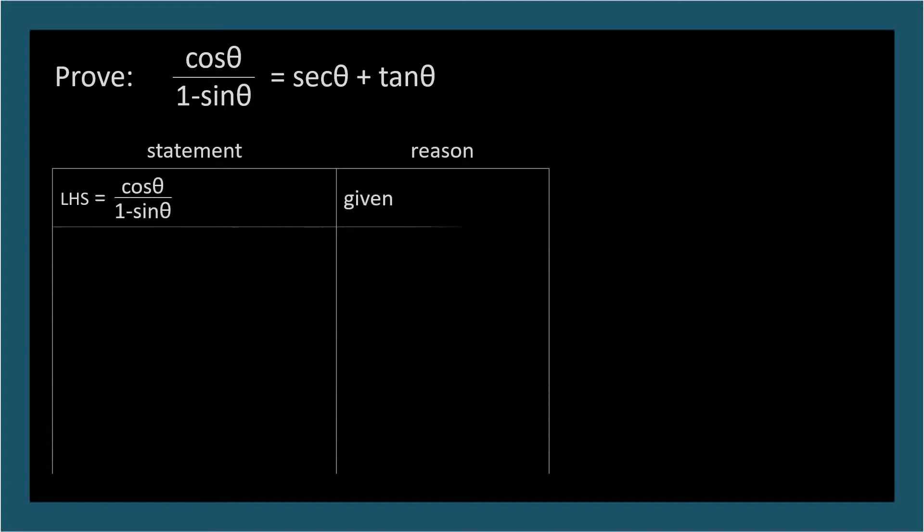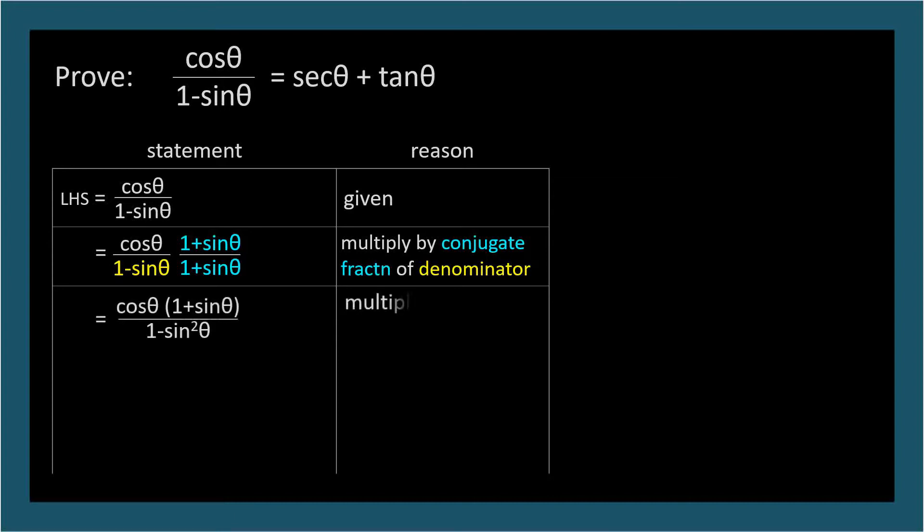1 plus or minus sine, or cosine, is a good candidate to multiply by its conjugate. We have 1 minus sine theta in the denominator, so let's multiply by the unit fraction consisting of its conjugate, namely 1 plus sine theta over 1 plus sine theta. I'm adding a little color coding to help you see what's going on. This gives us the difference between two squares, 1 minus sine squared theta, in the denominator when we multiply across.